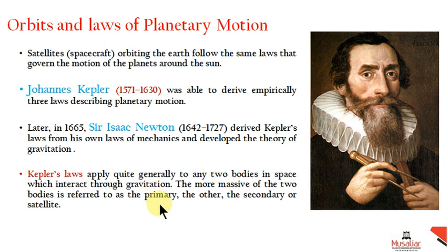In a two-body system, the more massive body is referred to as the primary, and the other is the secondary or satellite.